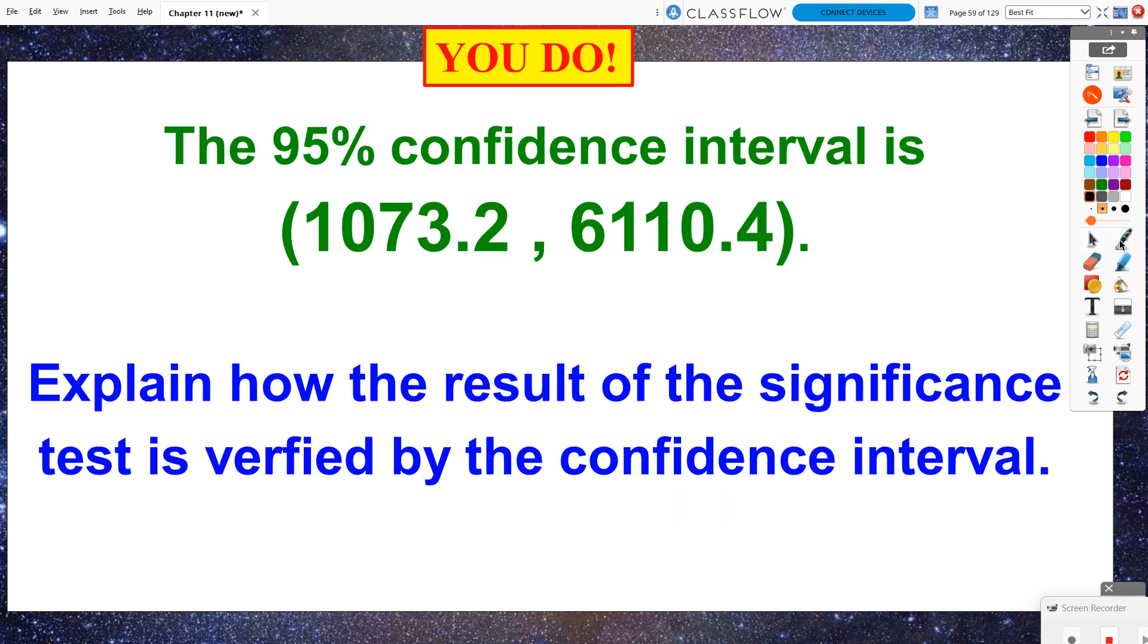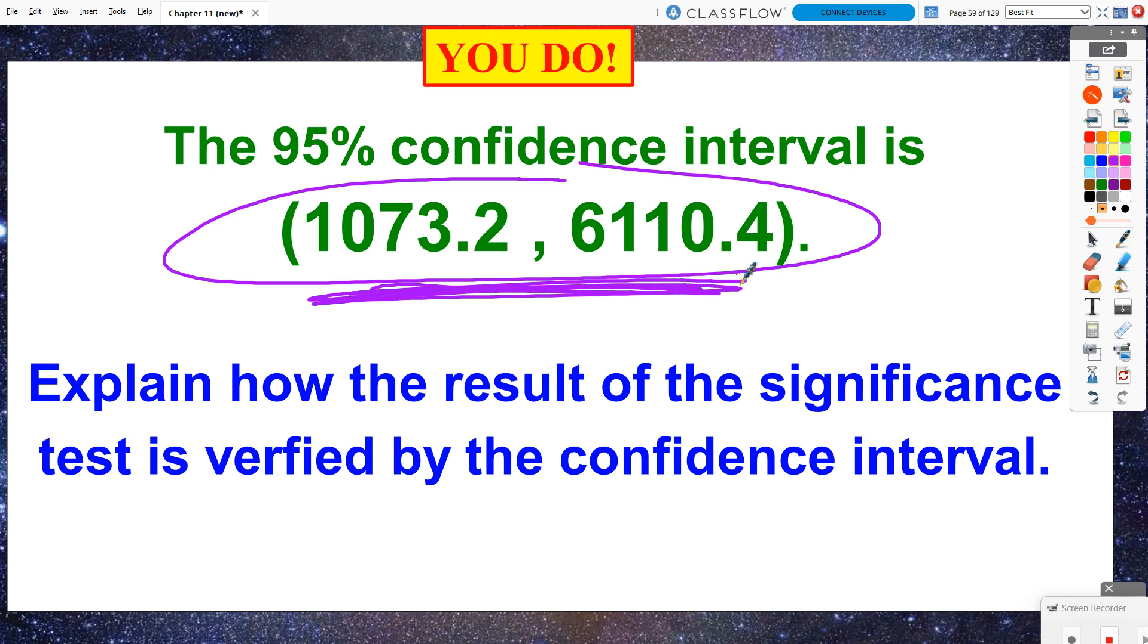What I want you guys to do is now reflect back on last chapter. If I had given you the 95% confidence interval, explain how the result of the significance test, remember we said we rejected the null hypothesis, how could we also look at this confidence interval and also say that we would still reject the null hypothesis based on the confidence interval? We will discuss that the next day in class.